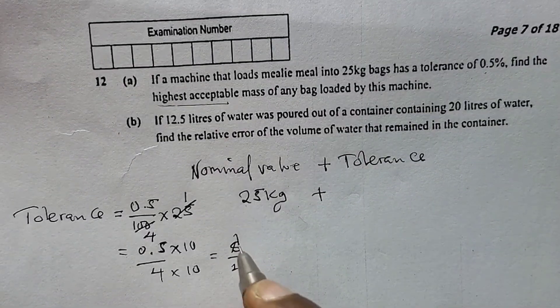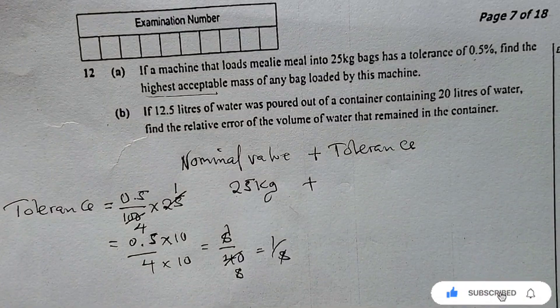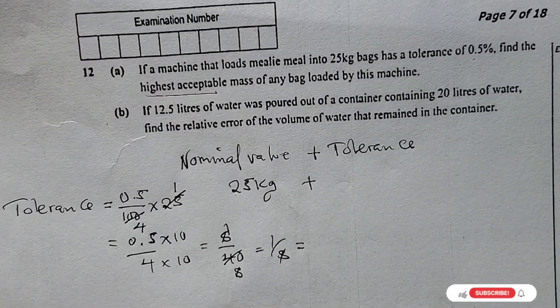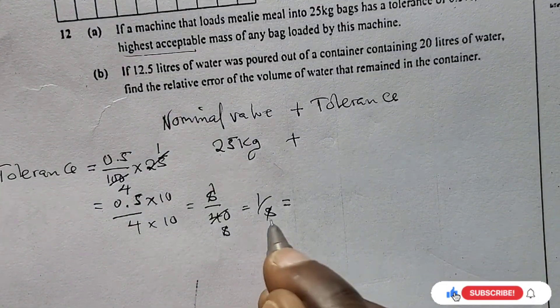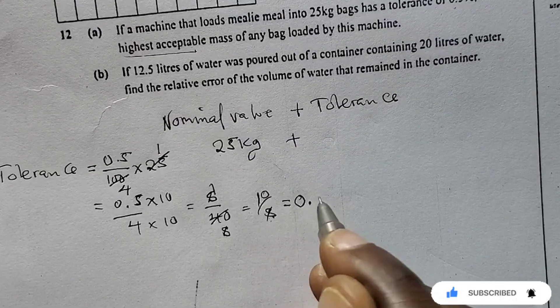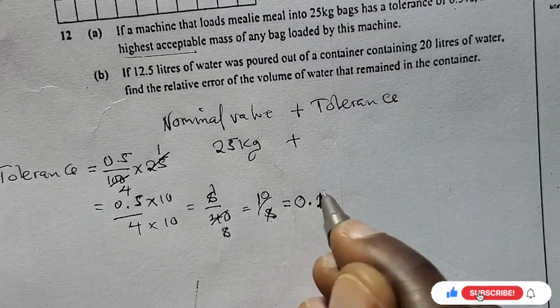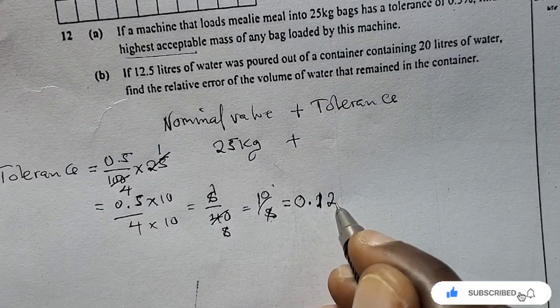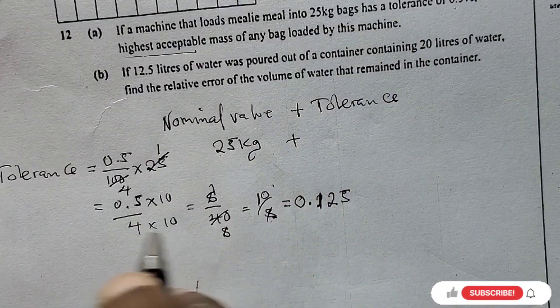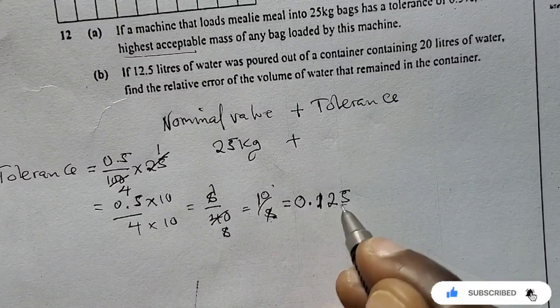5 into 40 is 1 over 8. We can still divide further to give you decimals. So 8 into 1 is 0 point, this becomes 10, 8 into 10 is 1 remainder 2, then 8 into 20 is 2 times remainder 4, and that becomes 40, 8 into 40 is 5. So 0.5 divided by 100 times 25 is 0.125.